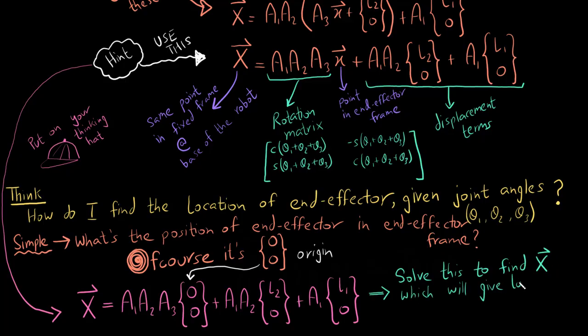So with all the unknowns known, I just solve this equation and I would get a 2 vector, such as 4 and 5. So the 4 would represent the x coordinate of the end effector in the fixed frame and the 5 would represent the y coordinate of the end effector in the fixed frame.